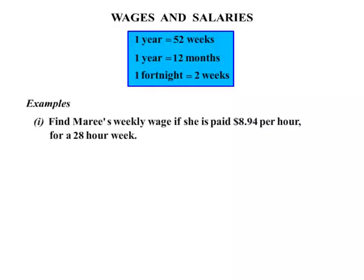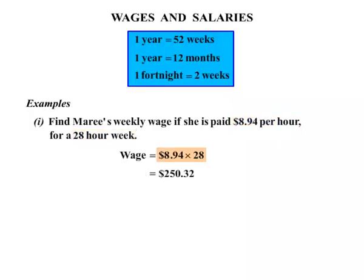Let's look at some examples. The first one: we need to find Marie's weekly wage if she is paid $8.94 per hour for a 28-hour week. She's getting $8.94 per hour, meaning every hour, and she's working for 28 hours. So we simply multiply $8.94 times 28 and we get $250.32.